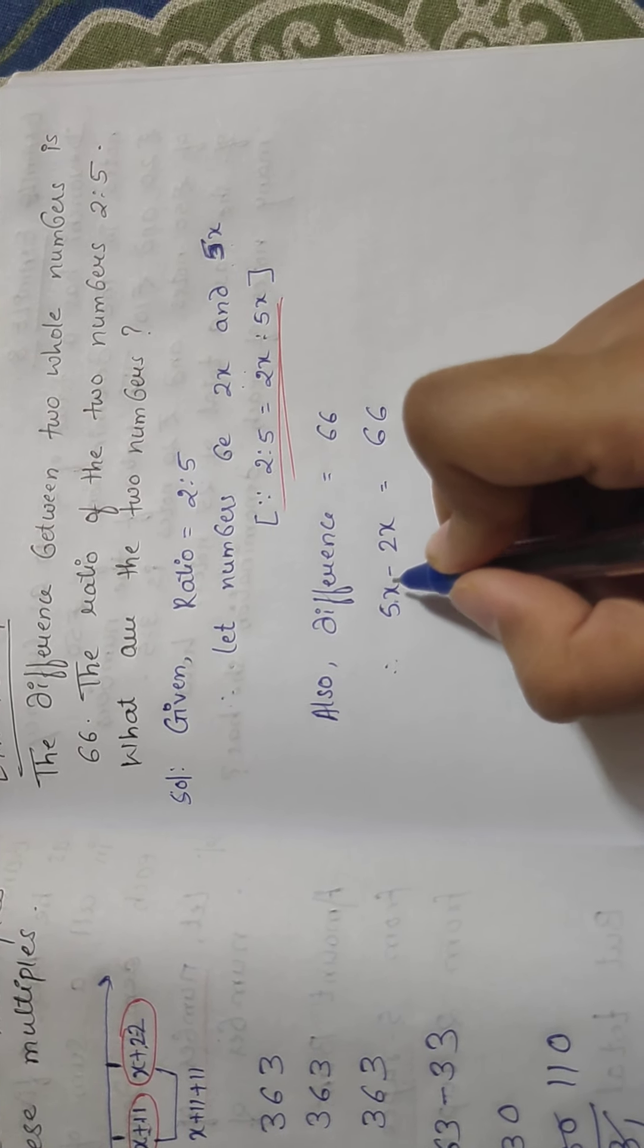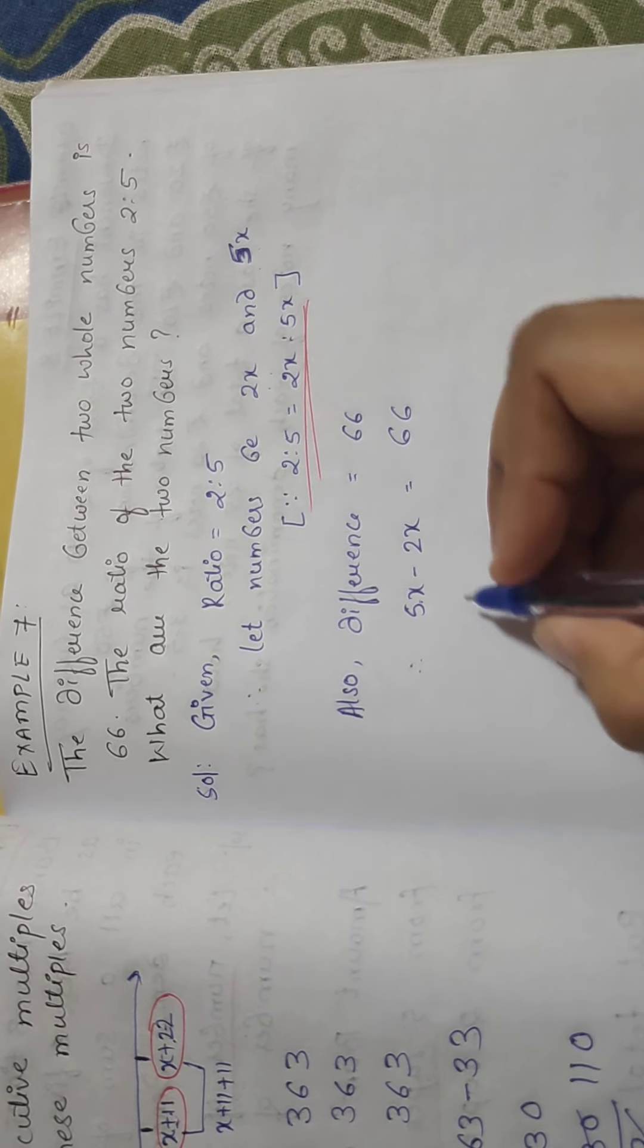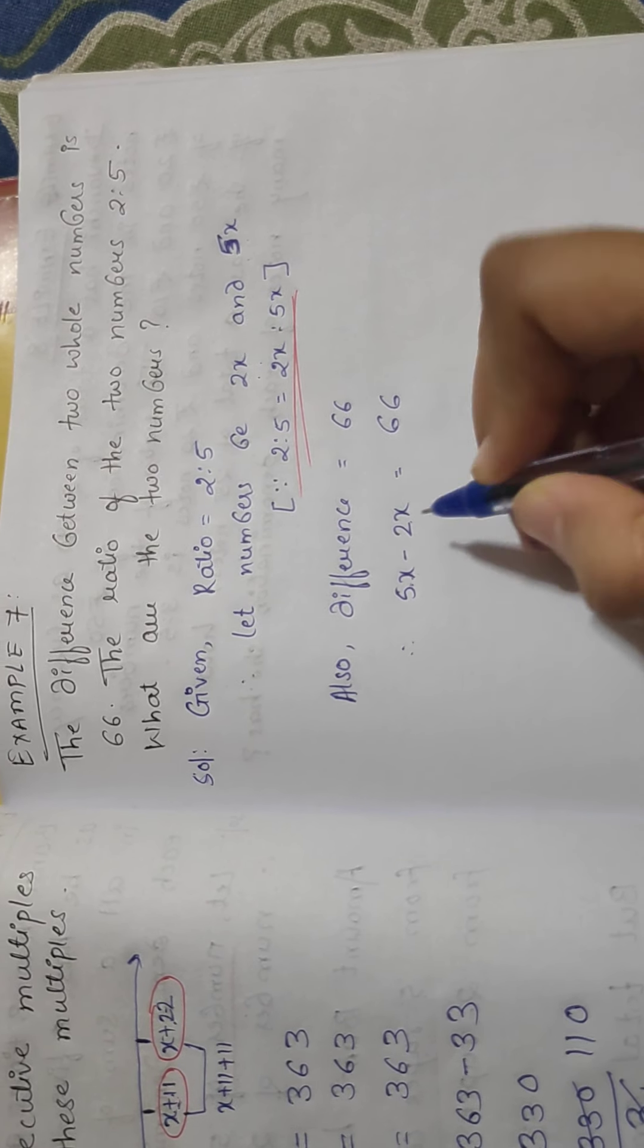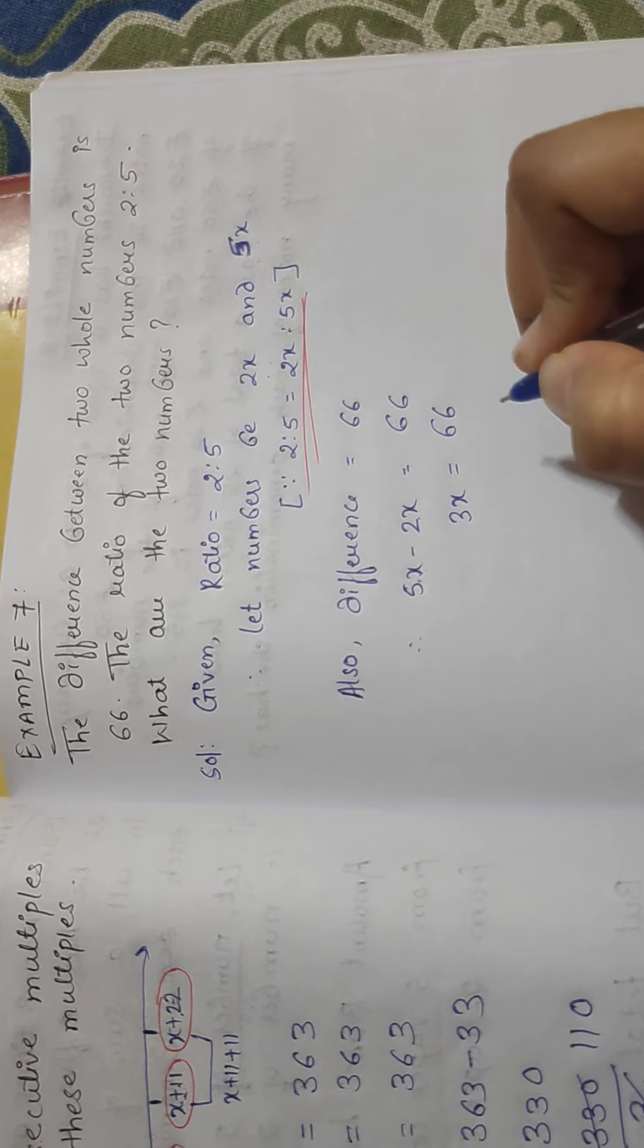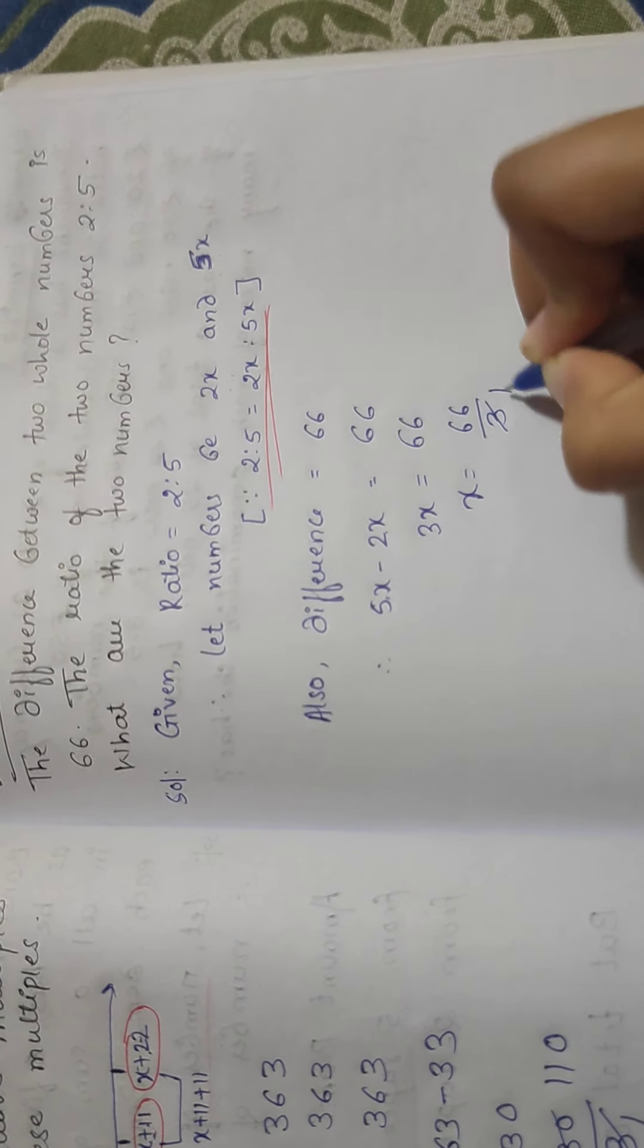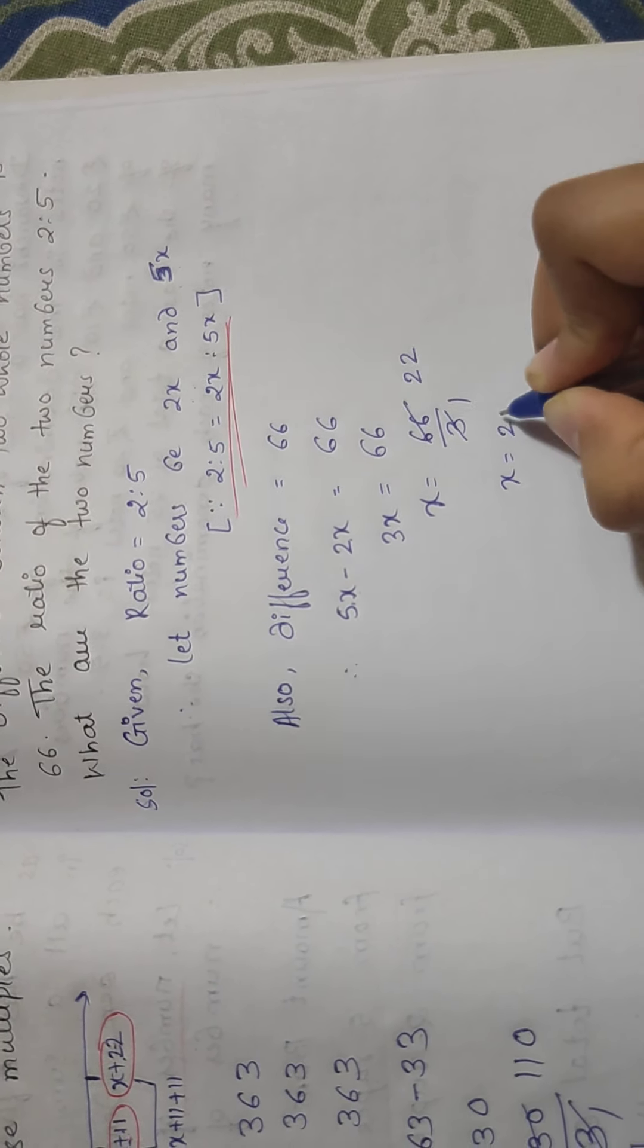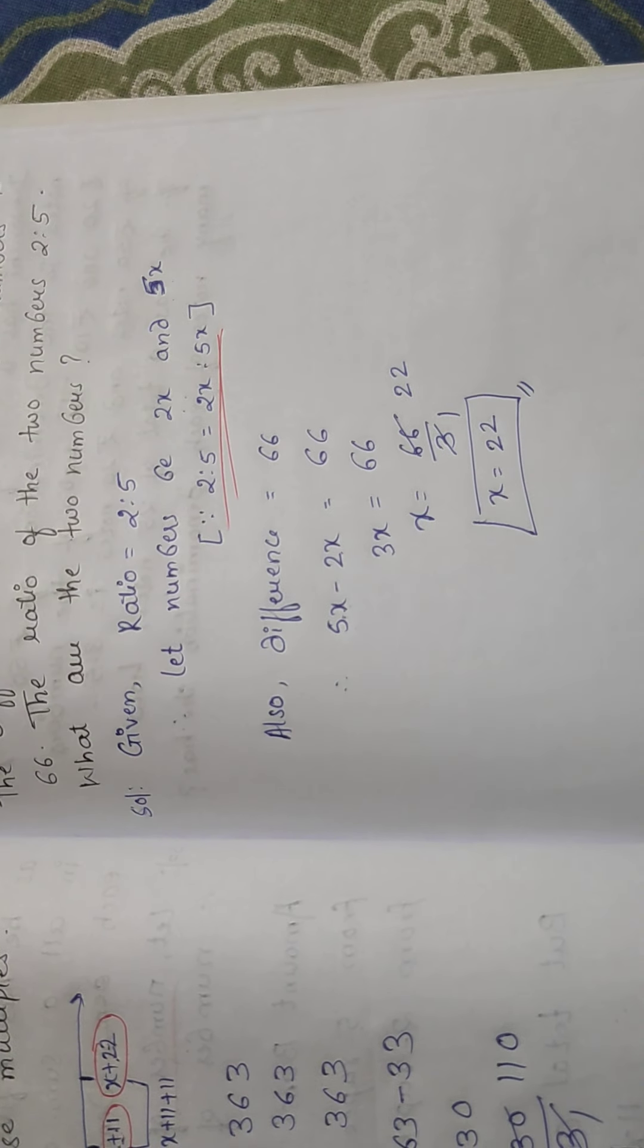Now if we get the value of x, we'll find out these numbers also. Okay, now as these are like terms, so we can subtract them. 5x minus 2x we can say is 3x is equal to 66. Now by transposing method we can say x is equal to 66 divided by 3, so it will be 22.